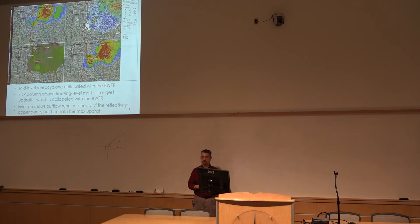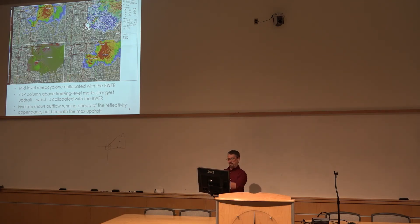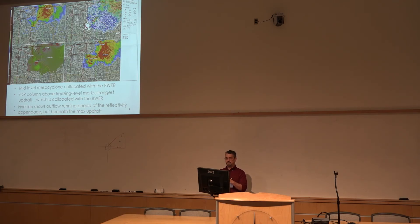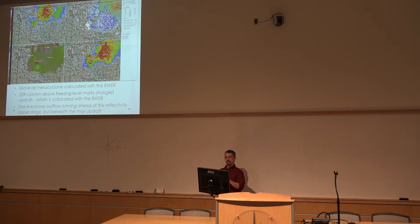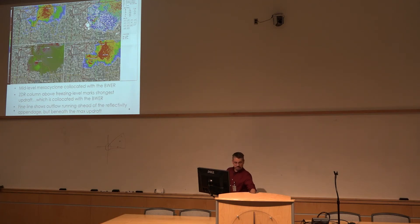Why would you have liquid raindrops above the freezing level? That's because that's where the updraft is. The B-wear is marked in the lower right, and you can see it has the Gibson Ridge red square that helps ensure everything is geo-synced up. The mesocyclone center at that higher altitude is in the center of the B-wear. So the updraft from the ZDR is exactly where the B-wear is, which is exactly where the center of the mesocyclone is — it all makes sense.